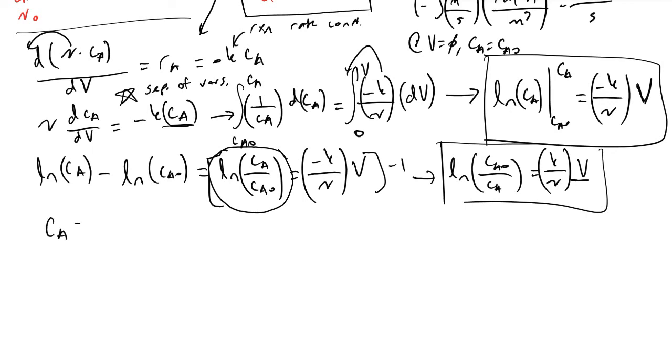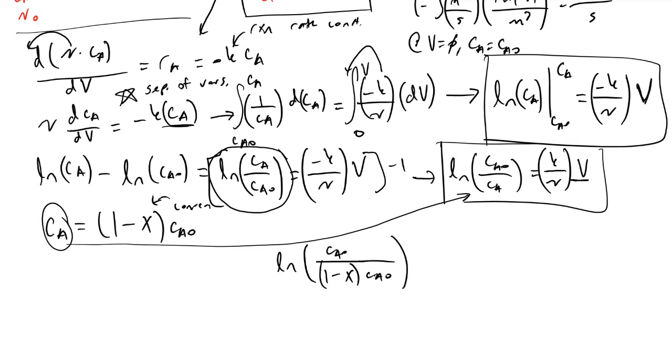One way we can look at it, because we have constant volumetric flow rates, is that CA, the outlet concentration, is equal to (1 - X), our conversion, times CA0. If we take this definition and plug it into this equation right there, what we'll find is that we now have the natural log of CA0 divided by (1 - X) times CA0, which is equal to (k/v) times V. This equation right here is the star of the show in this video.